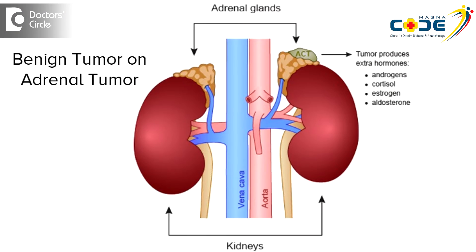Smaller size tumors can be left alone, and very often these benign adrenal tumors are recognized incidentally. When you go for a scan for some other reason — such as abdominal pain unrelated to the adrenal gland — you may find on ultrasound or CT scan that there is a small tumor. These are called incidentalomas, and typically a benign adrenal tumor is asymptomatic.